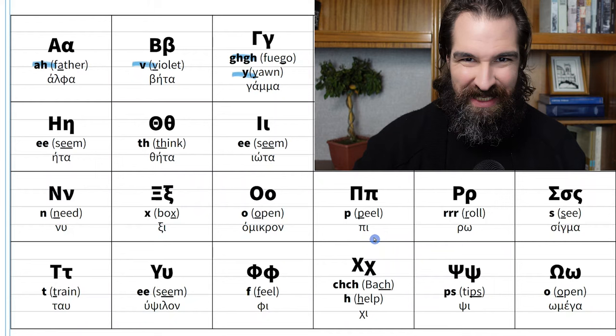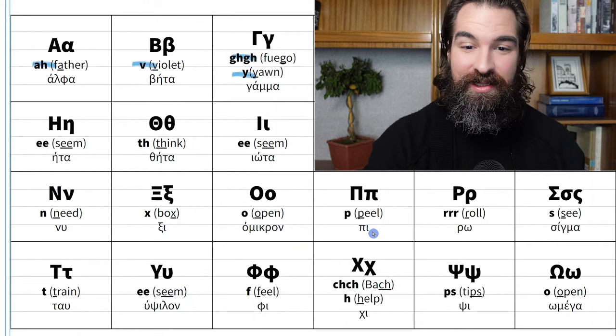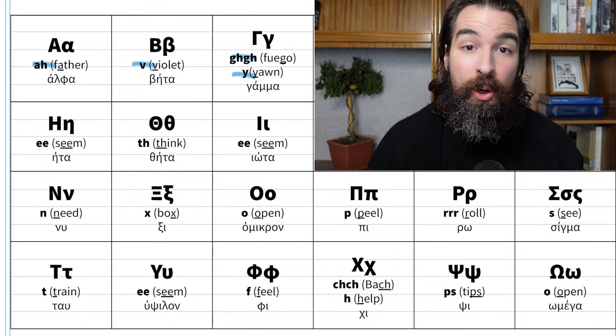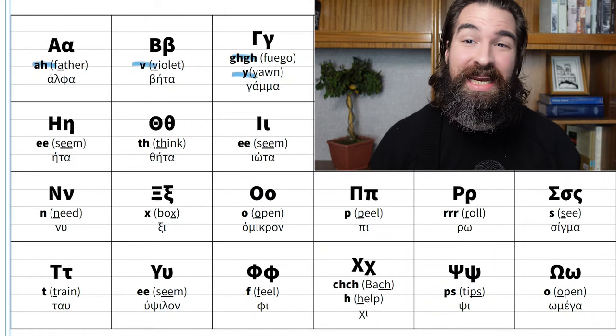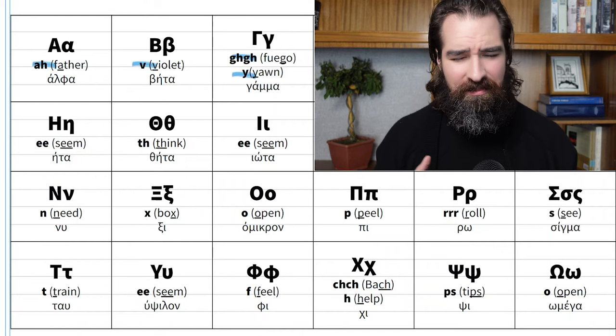Pi looks like math and makes the P sound, just like in the word 'peel.' Right next to it, what looks like a P is not a P sound — that's rho, an R sound, and it's often rolled. It's called 'ro.' If you can roll your R's, great. If not, that's okay — rolling your R's should not be your priority at this point.